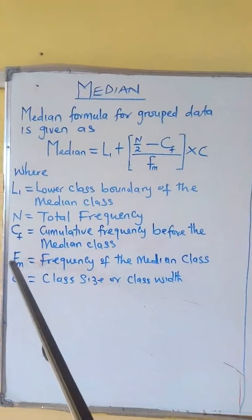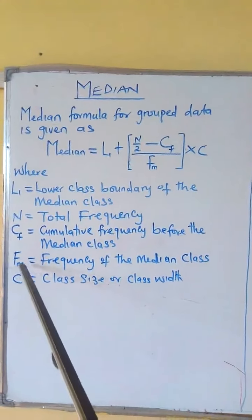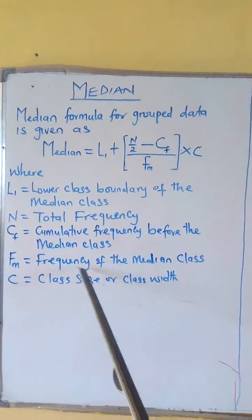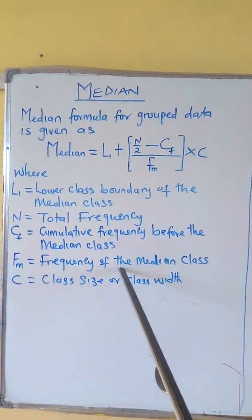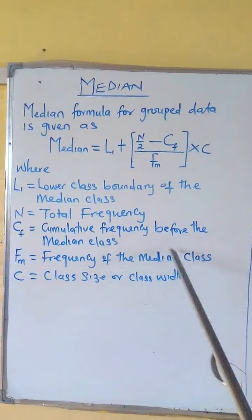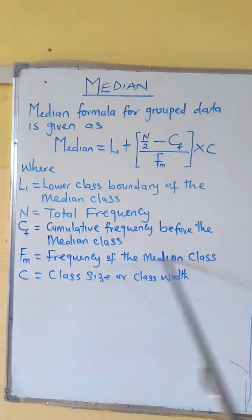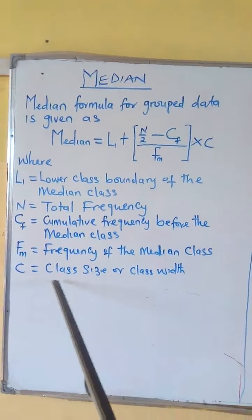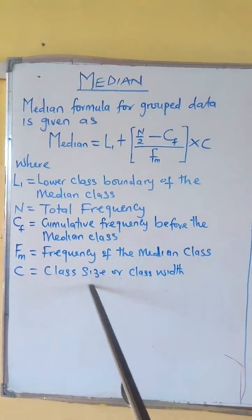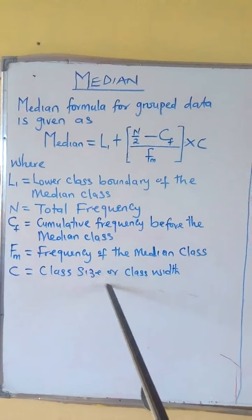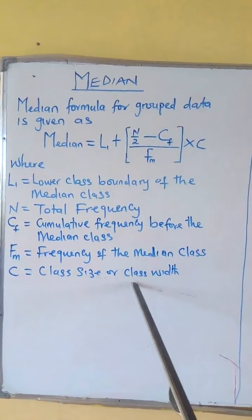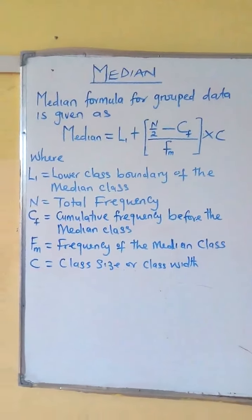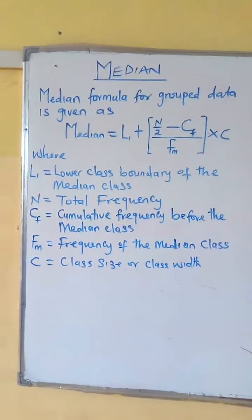F subscript M is the frequency of the median class, while C is your class size or class width — you can also call it class strength.